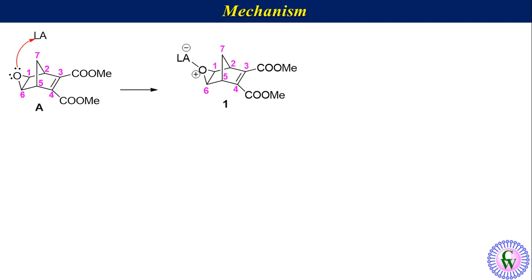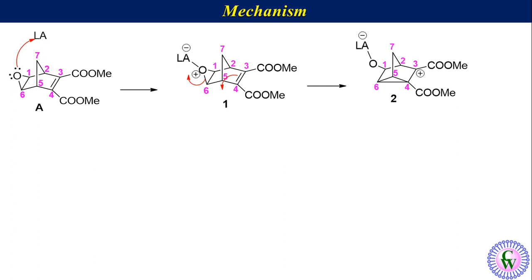Breaking of the C6–oxygen sigma bond, breaking of the C3–C4 pi bond, and formation of the C4–C6 sigma bond leads to the formation of species 2.